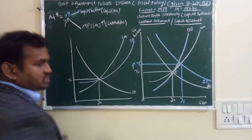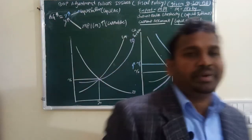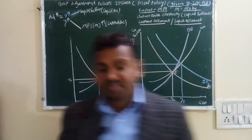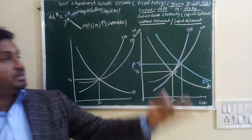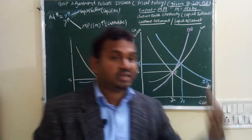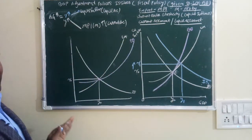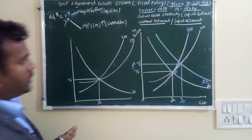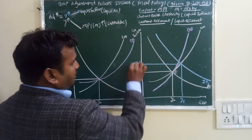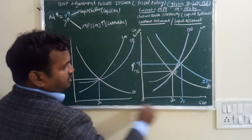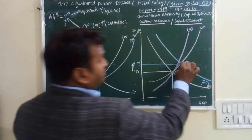Balance of Payment always balances because the capital account surplus and current account deficit offset each other. So if fiscal policy changes, R increases and GDP also increases. These are the two impacts of the fiscal policy change.